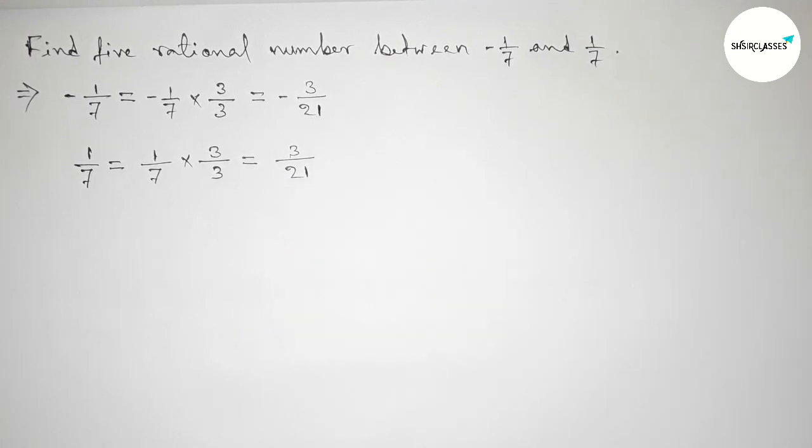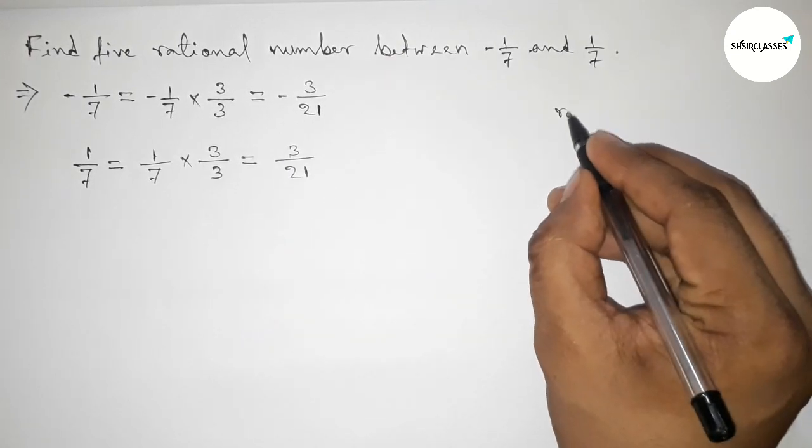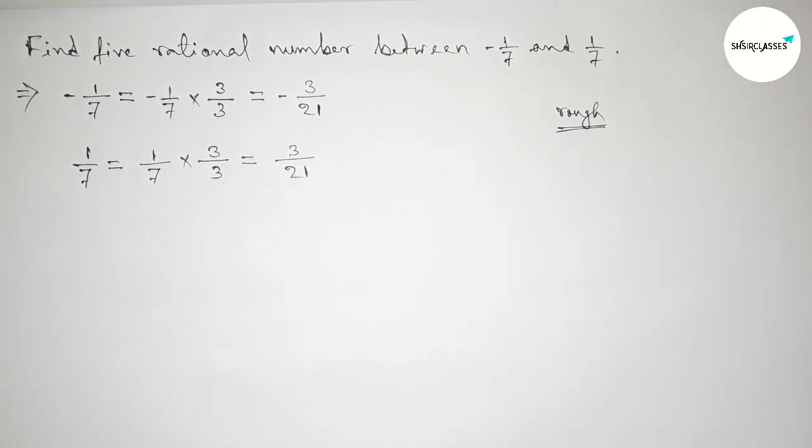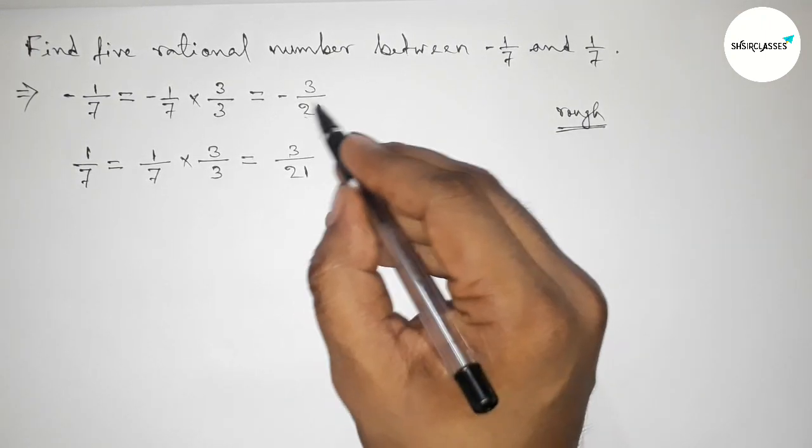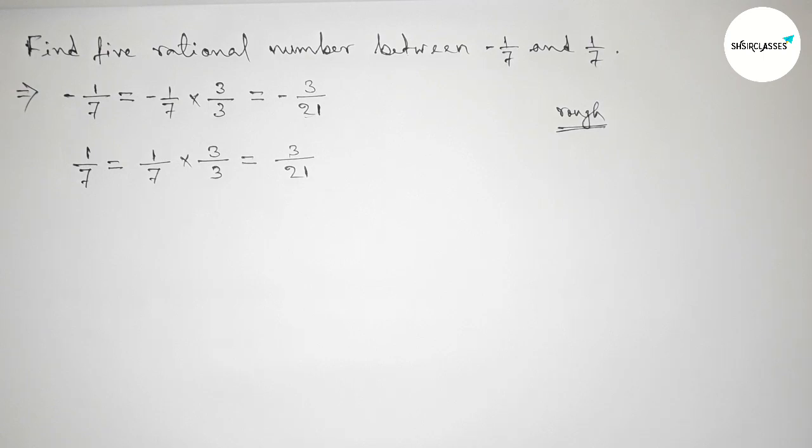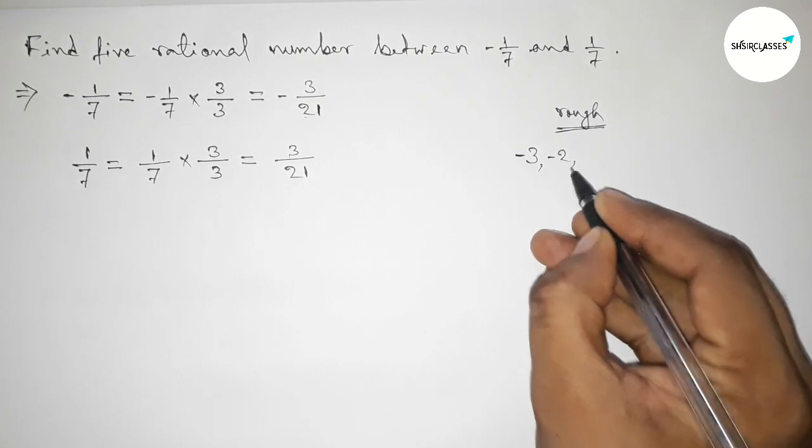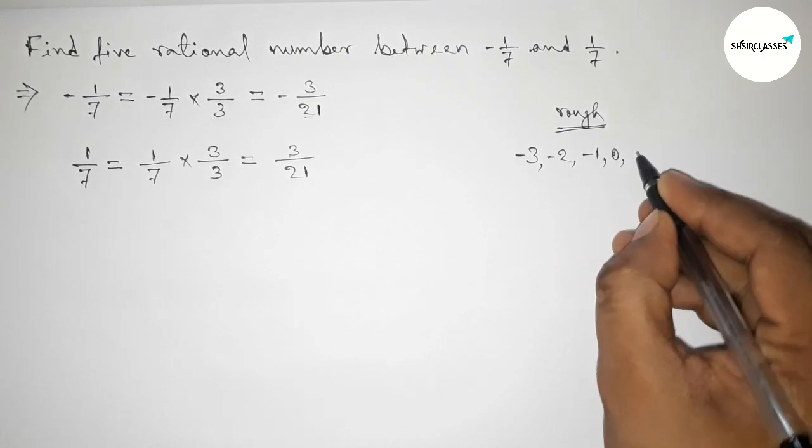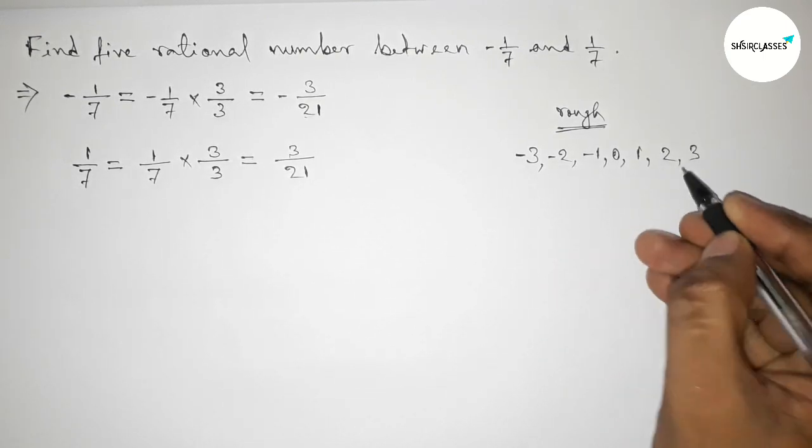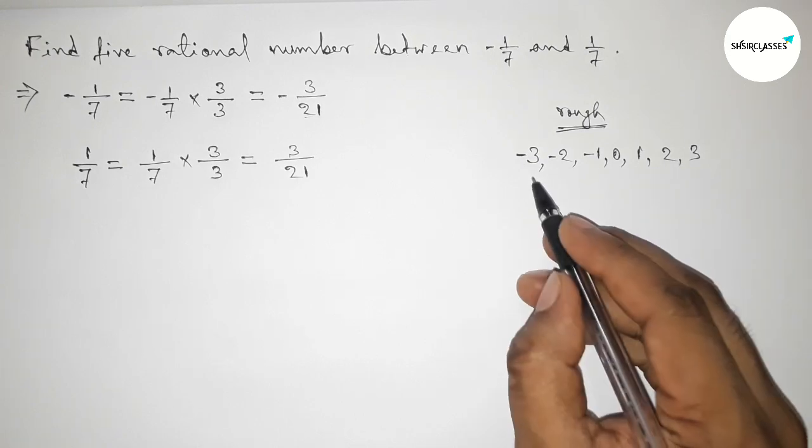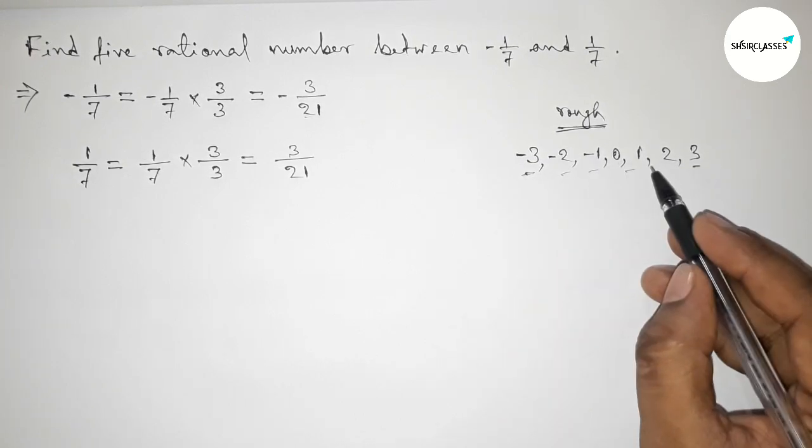Now discussing here some important calculation. So here both the denominators are 21. And now between -3 and 3, we can get here 5 integers: -2, -1, 0, 1, 2.